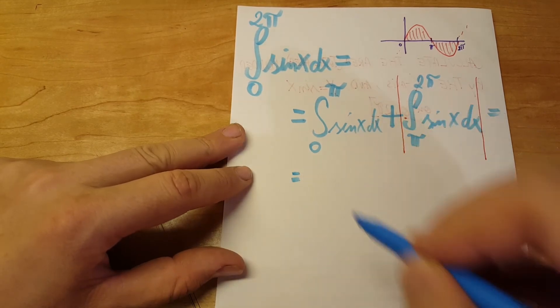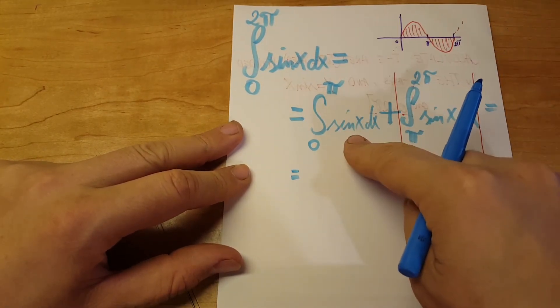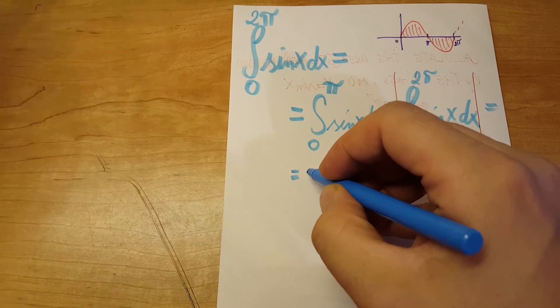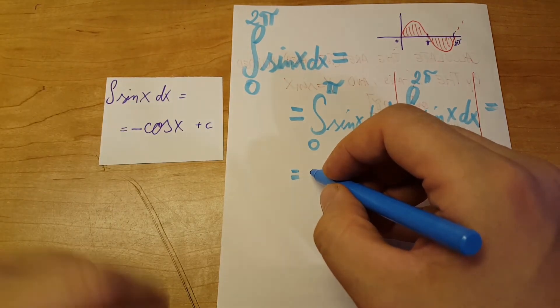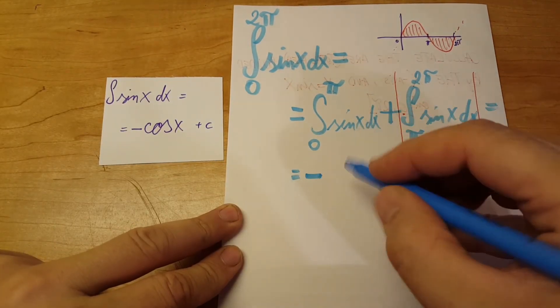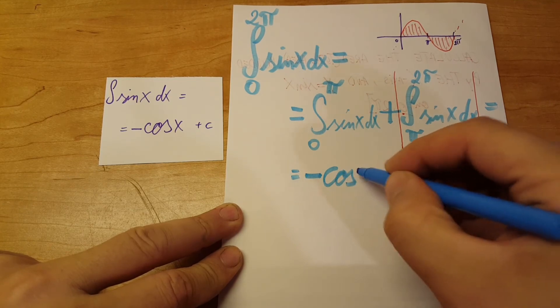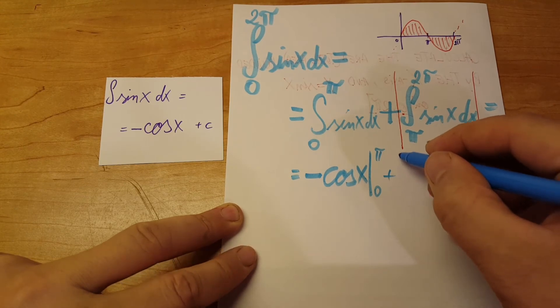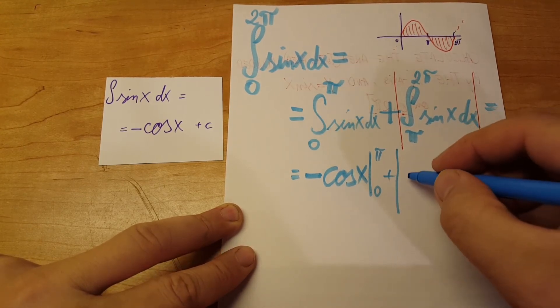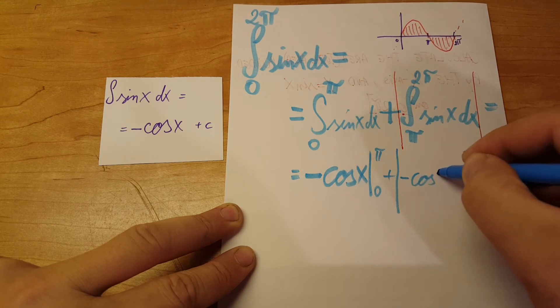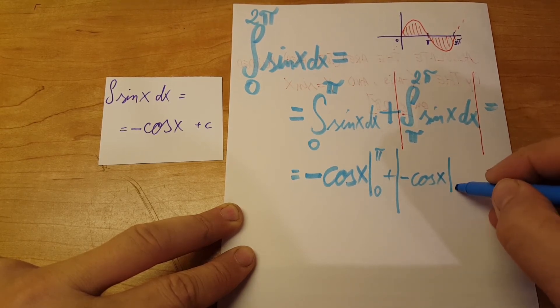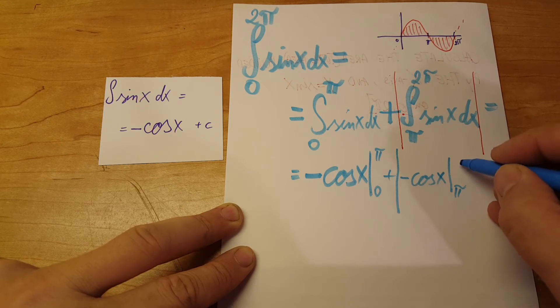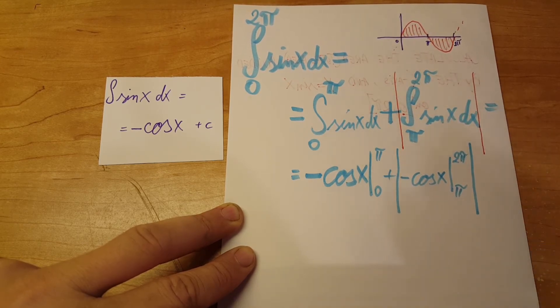All right, let's continue. Integral of sine - simple formula - is gonna be negative cosine of x, evaluated from zero to pi, plus the absolute value of negative cosine of x, evaluated from pi to two pi.